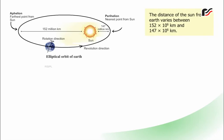The distance of the Sun from Earth varies between 152 × 10⁶ km and 147 × 10⁶ km.